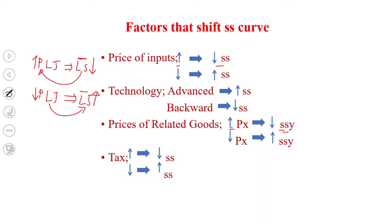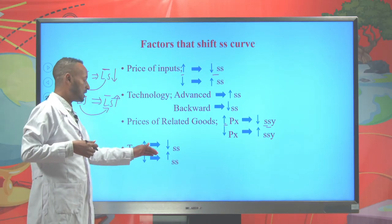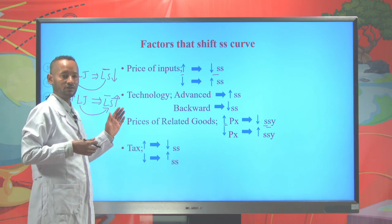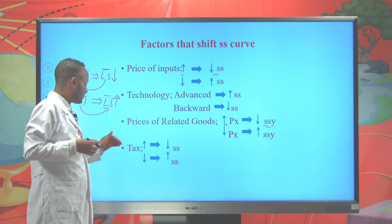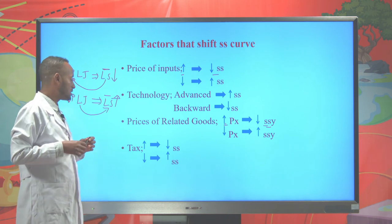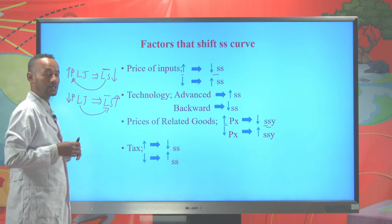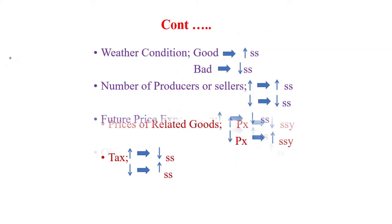Tax is another determinant. With an increase in tax, producers will supply less of a commodity and the supply curve shifts to the left. And with a fall in the tax imposed by the government, supply of a commodity will increase and the supply curve shifts to the right.